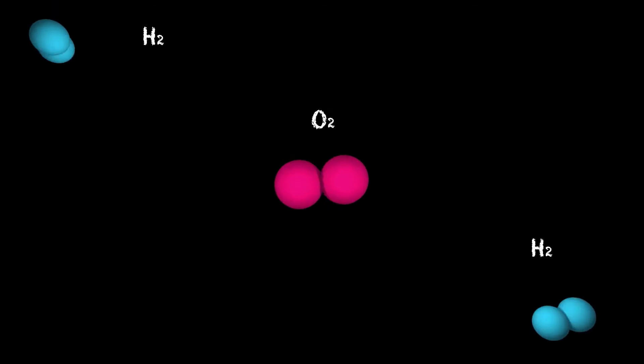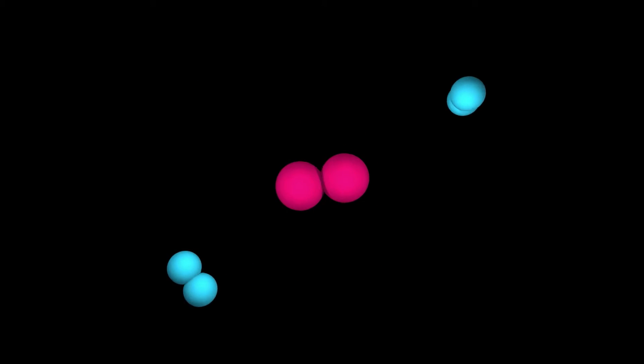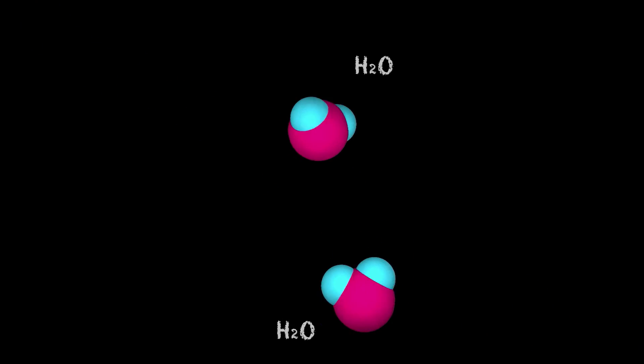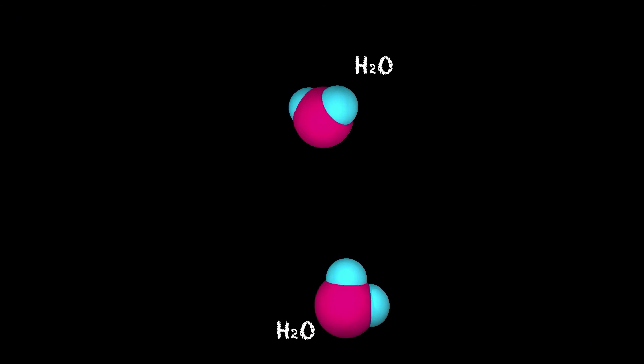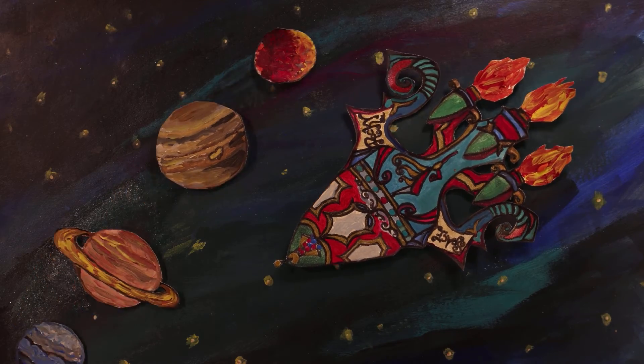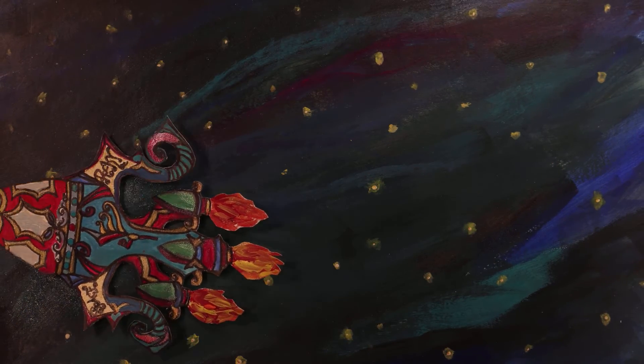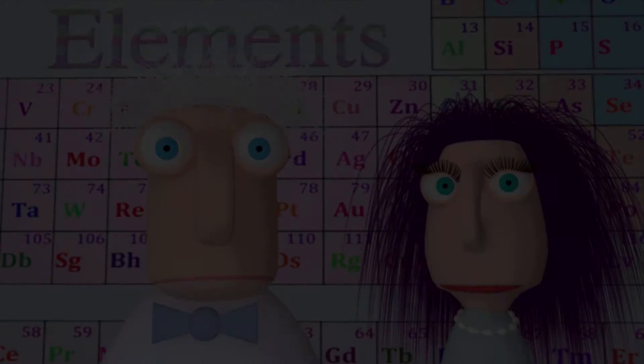At regular air temperature, molecules of hydrogen and oxygen bounce off each other like balls. However, at high temperatures they combine, producing water and lots of heat. The energy released in this oxidation reaction is used by powerful rocket ship engines.